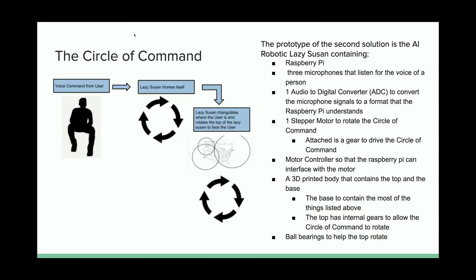The prototype of the second solution is the AI Robotic Lazy Susan, which I think is called the Circle of Command. It contains a Raspberry Pi, three microphones that listen to the voice of a person, one audio to digital converter to convert the microphone signals to a format that Raspberry Pi can understand, one stepper motor to rotate the Circle of Command attached to a gear that drives the Circle of Command, and a motor controller so that the Raspberry Pi can interface with the motor.